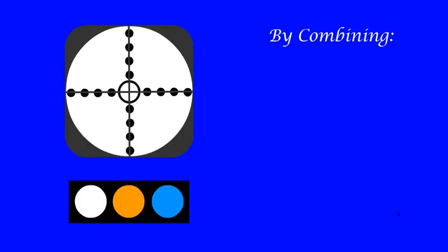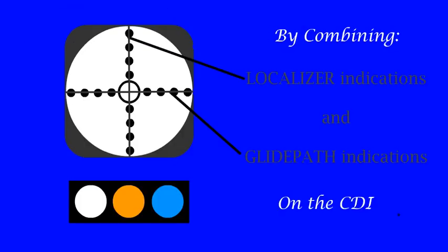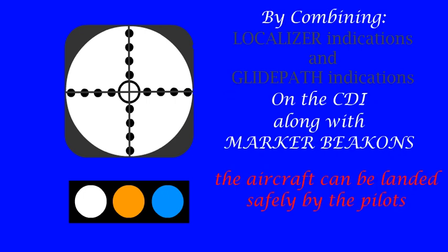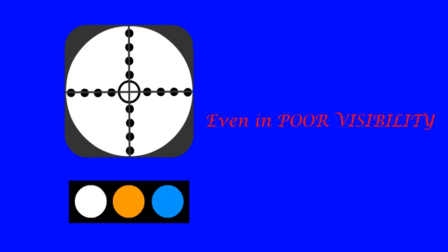By combining the localizer indications and the glide path indications on the CDI along with the marker beacons, the aircraft can be landed safely by the pilots, even in poor visibility.